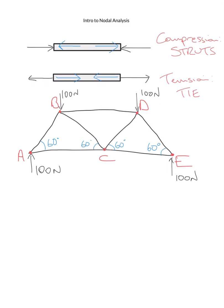We'll add on some forces: 100 newtons acting down at node B and at node D, with reaction forces of 100 newtons at A and 100 newtons at E. These are all equilateral triangles, so it's a symmetrical shape — 200 newtons acting down means we must have 200 acting up to balance it. We want to know the force in members AB, AC, and so on — all the internal forces — so a structural engineer can ensure the system doesn't fail.